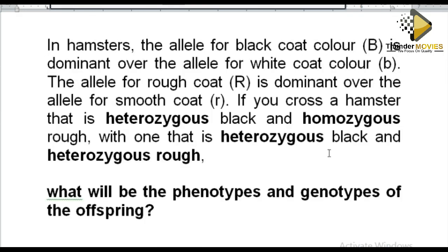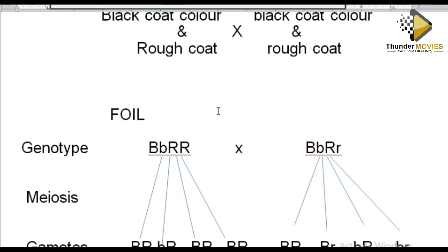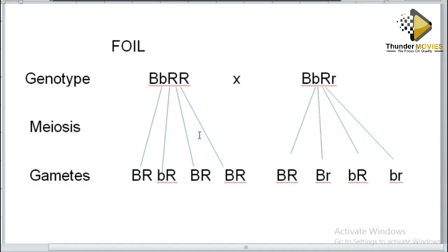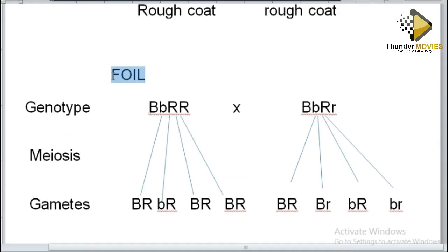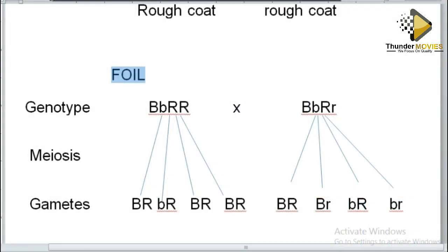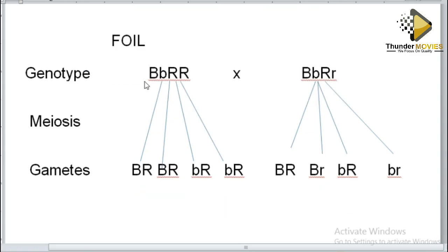This is not a cross yet. To identify which gametes are being formed, you can use a method called FOIL. FOIL stands for First, Outer, Inside, and Last. This method helps you identify which gametes are coming, because students often mix this up.